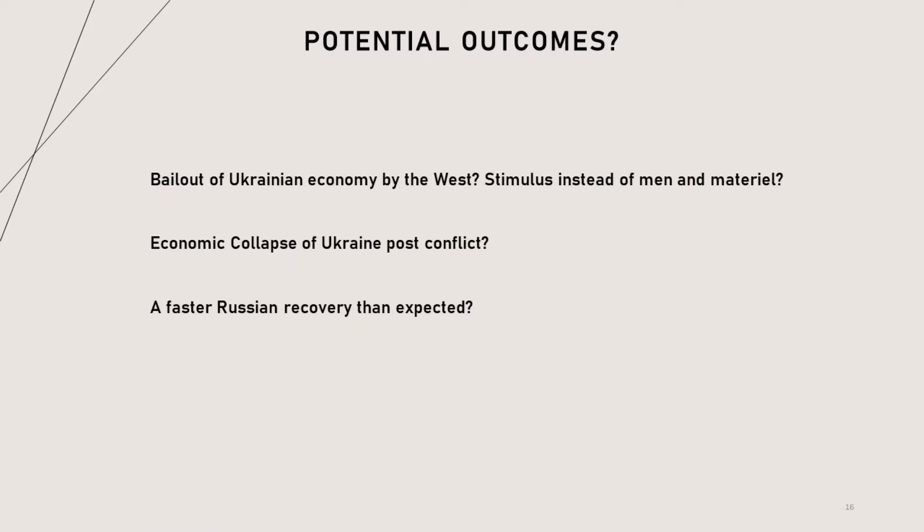So what are the potential outcomes of the Ukrainian bond market, the Russian bond market, and the overall Ukraine conflict? A bailout of the Ukrainian economy by the West is certainly possible — perhaps sending stimulus and money instead of men and materiel. An economic collapse of Ukraine post-conflict is also possible; that certainly seems to be what bond markets are pricing in right now. A faster Russian recovery than expected may also occur. It goes without saying that the conflict in Ukraine is a human tragedy — I will include a link in the description to donate to the Red Cross to support the Ukrainian people.